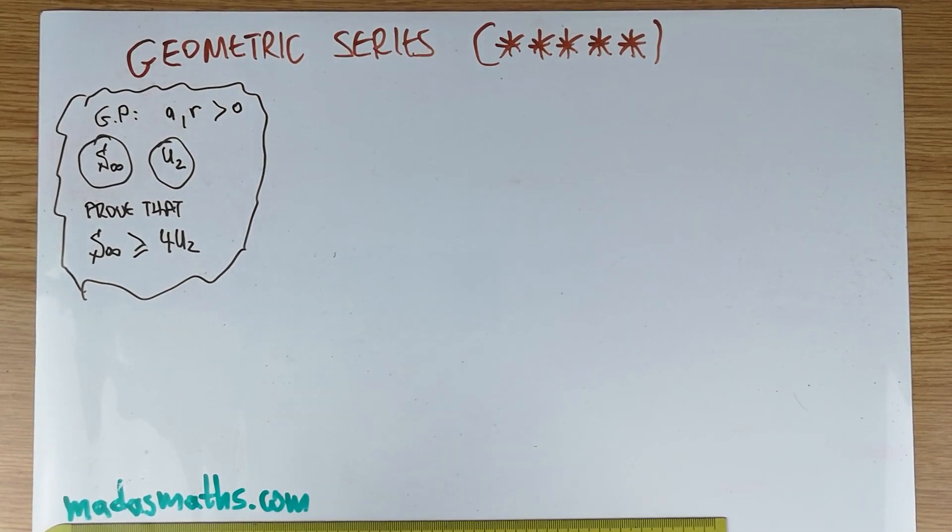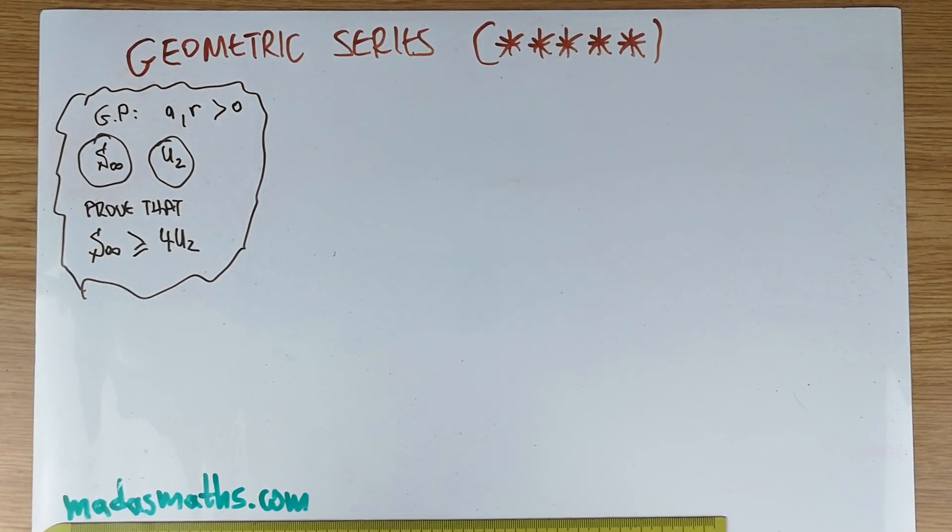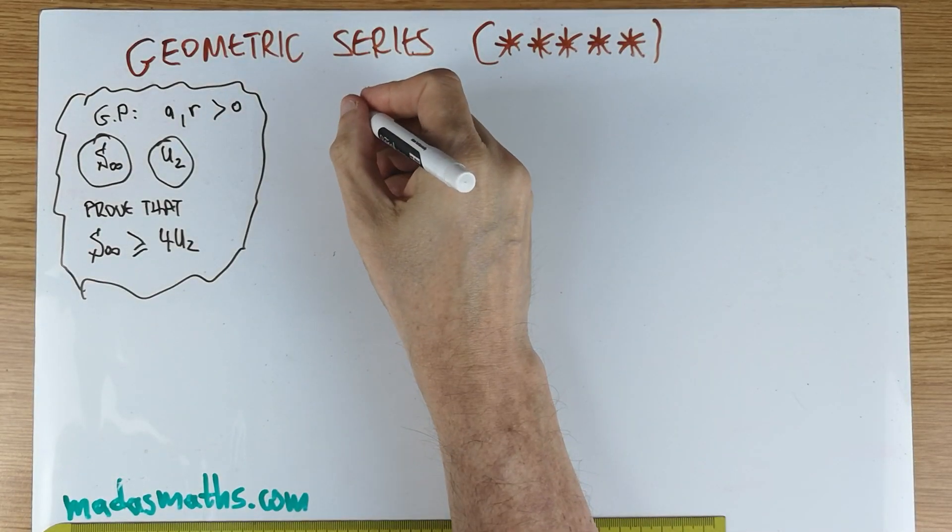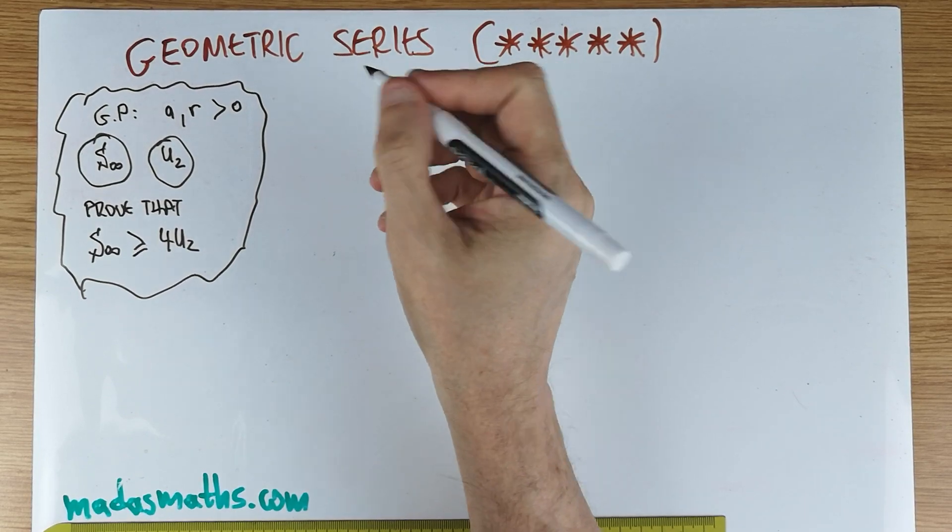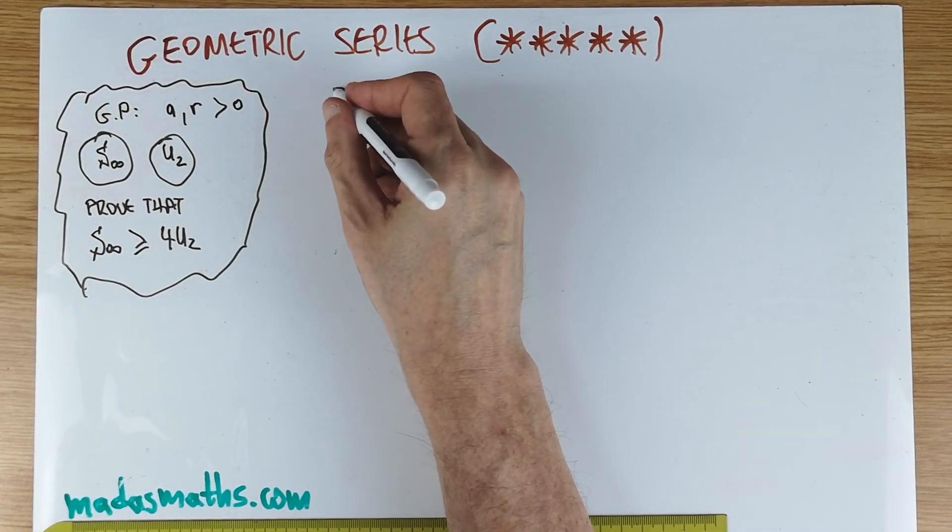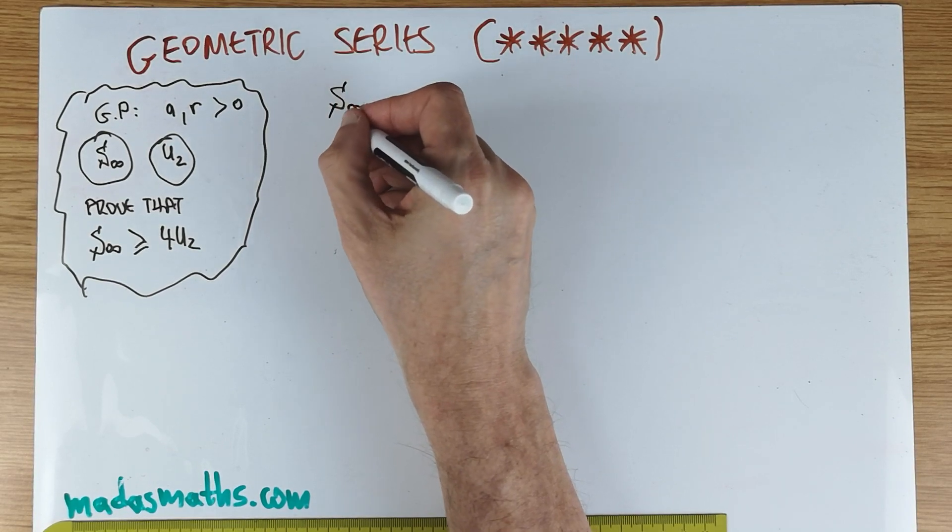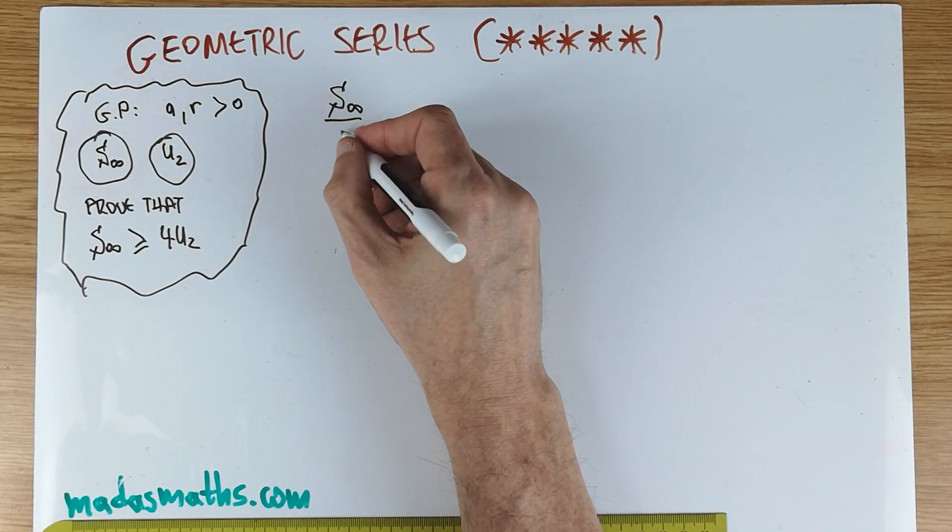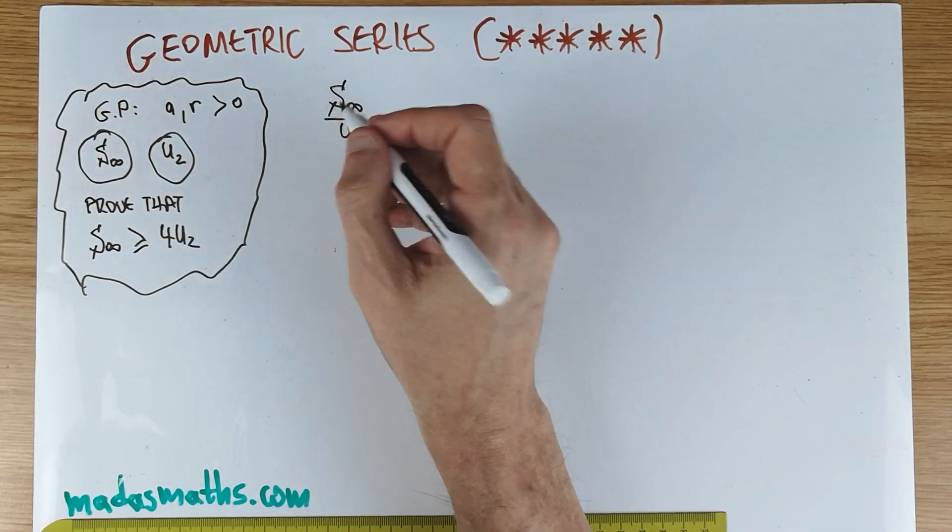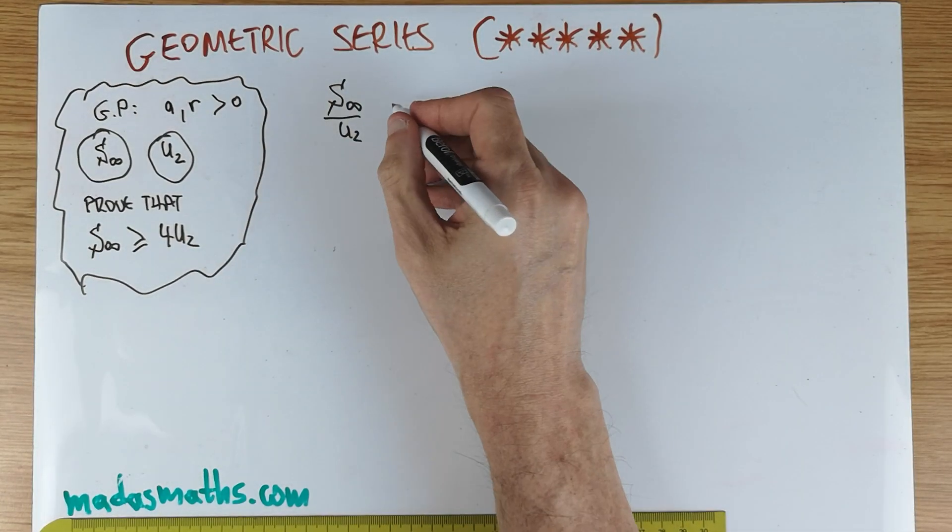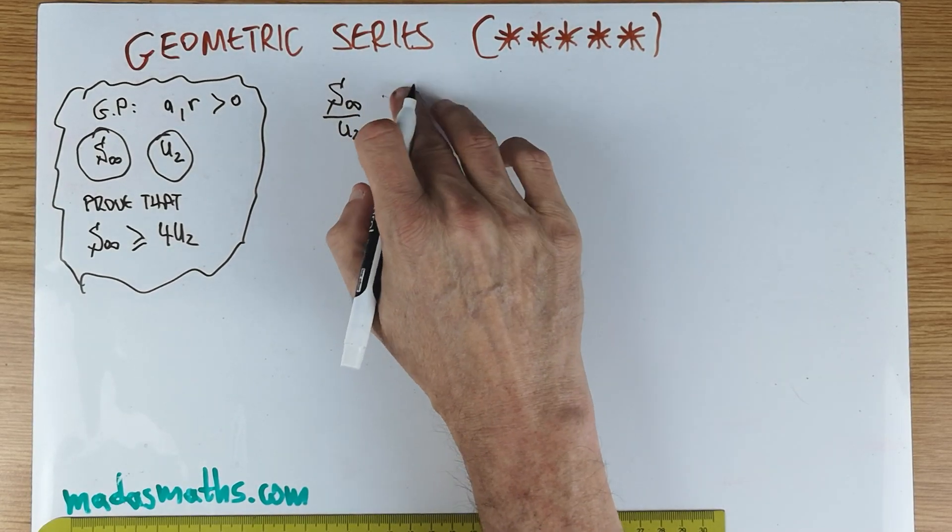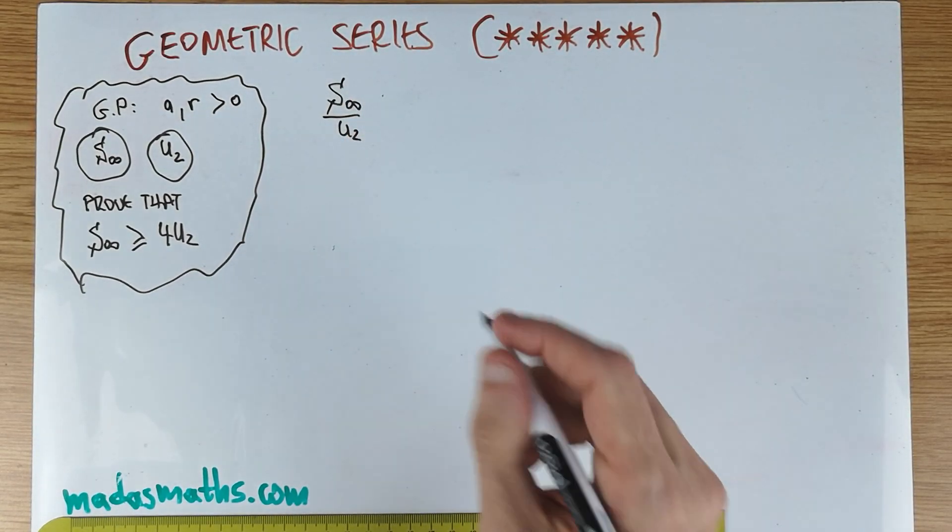And the question is, where do we start? I do apologize about my cough. Okay, this is one way of dealing with a problem like this. We're going to start with the ratio of the two quantities that I'm trying to find. So the sum to infinity over, not four times U2, but of course, over U2. And I want to come up eventually with the fact that this is at least four. Because this is what I'll try to prove.